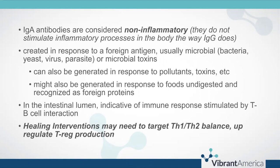IgA antibodies may be generated in response to foods which are undigested or recognized as foreign proteins. In the intestinal lumen, they are indicative of an immune response stimulated by T cell to B cell interaction. It's important to understand that healing interventions when an individual has a lot of IgA antibodies may need to target Th1 and Th2 balance, upregulating Treg production. Those topics are covered in detail in the wheat zoomer modules.